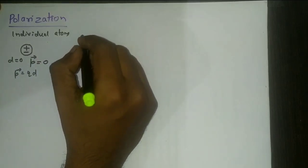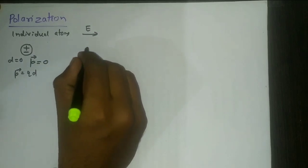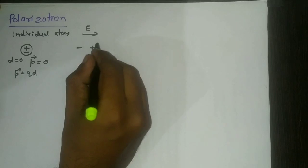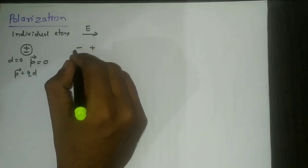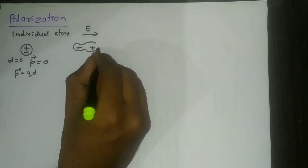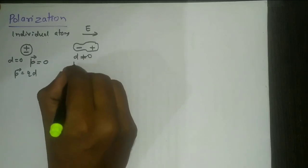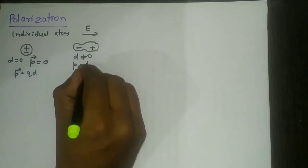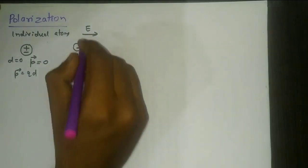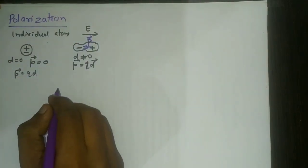If we place this same atom in an external electric field, the positive charges move in the direction of the electric field and the negative charges move in the opposite direction of the electric field — there will be a charge separation. Now D is not equal to zero. Does this atom or molecule have a dipole moment, that is Q into D? The direction of the dipole moment is from negative to positive.